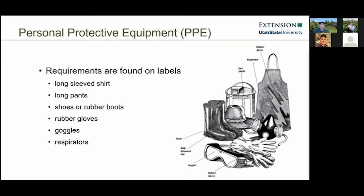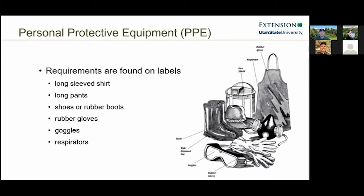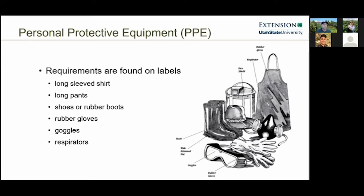The general PPE required on most products includes a long-sleeve shirt and long pants, shoes and rubber boots, and rubber gloves. Depending on the product, goggles, respirators, and additional protective equipment may also be required. These requirements exist to reduce the risk of exposure. Homeowner pesticides typically don't require special protective equipment beyond that baseline, but you can always use more PPE than the label requires — that's never against the law.